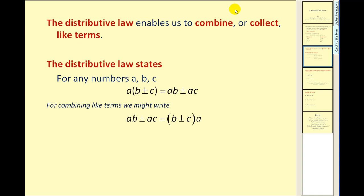The distributive law enables us to combine or collect like terms. The distributive law states for any numbers a, b, c: a(b ± c) = ab ± ac.